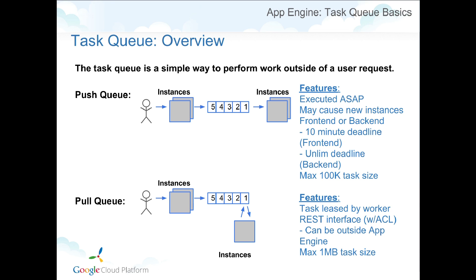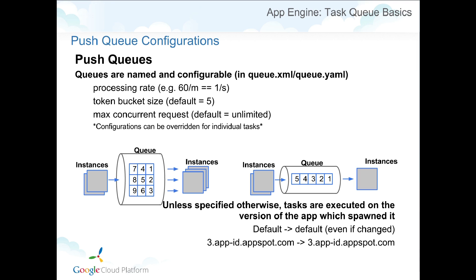A pull queue works differently — you have an instance that you spin up, then go to that queue and get a lease on some tasks. You crunch through your work, and when done, you delete the task, essentially saying you have completed processing for that task. There is a complete REST interface over the pull queue, which allows you to run your worker from anywhere — on-premise, another App Engine instance, either front-ends or back-ends. You have a maximum of one megabyte in task size. Unlike a push task where you have parameters posted with the request, a pull task is a piece of data that you get back when you release the task.